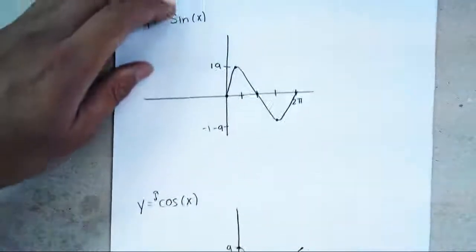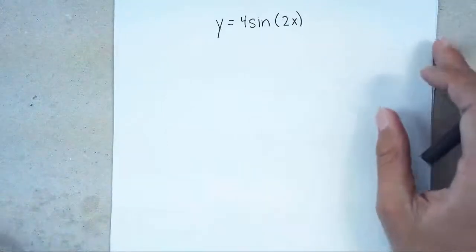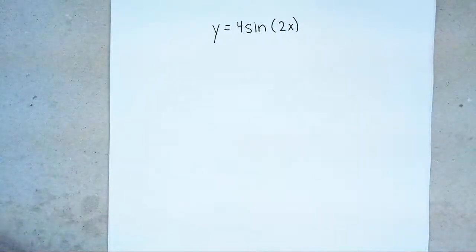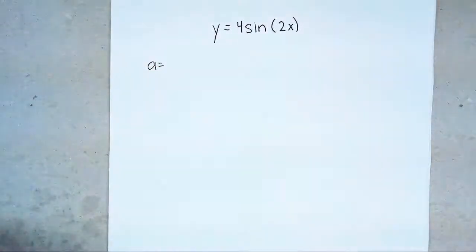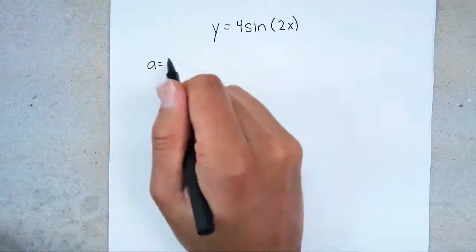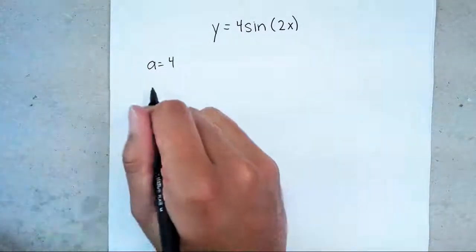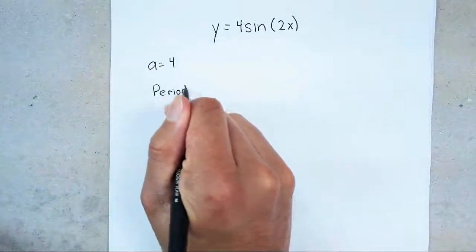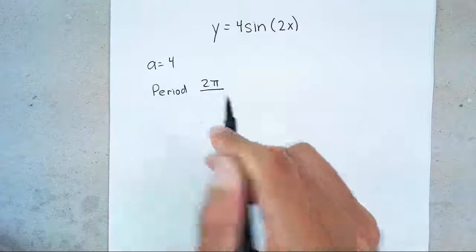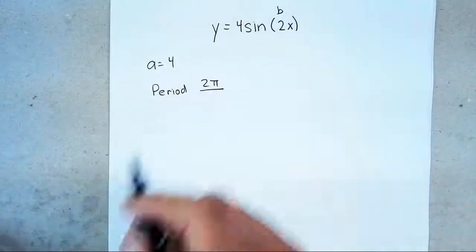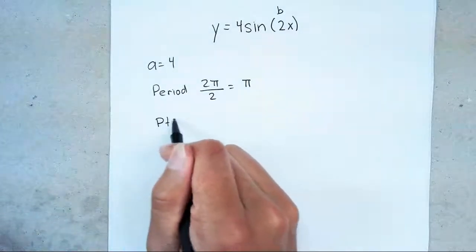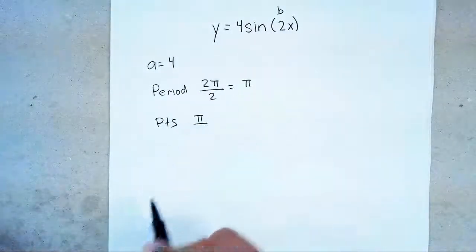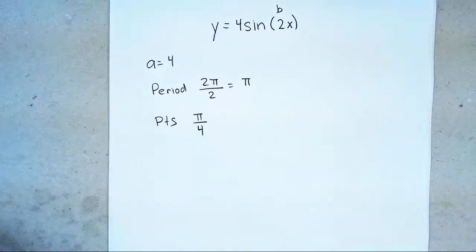Let's do an example: y = 4sin(2x). First, figure out your amplitude. Your A is always going to be positive, so A = 4. Next, figure out your period — we know the period is 2π over whatever number is in front of x, so 2π over 2 gives you π. Lastly, you have to find your points by taking your period and dividing by 4, which gives us π over 4.